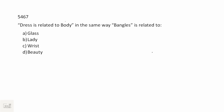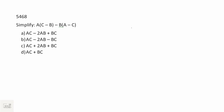Analogy: Dress is related to Body — we put a dress on the body. In the same way, Bangles is related to Wrist — we wear bangles on the wrist. Do not mark 'lady'; it is wrist. Next, simplification: simplify AC minus AB minus AB plus BC. That would be AC minus 2AB plus BC. Option A.